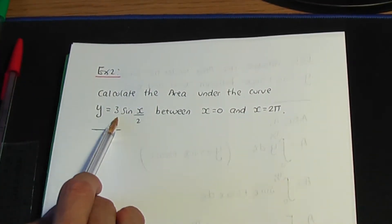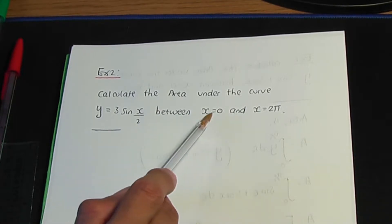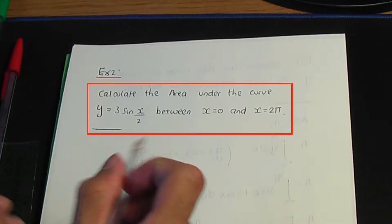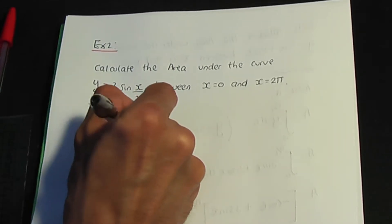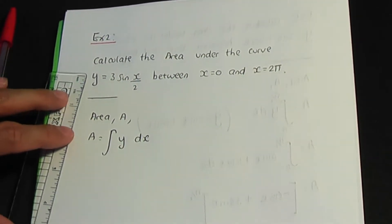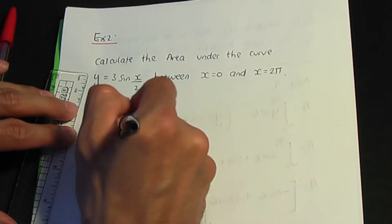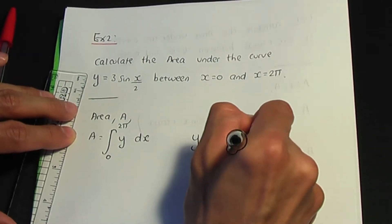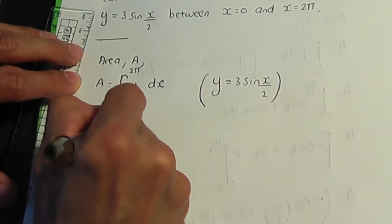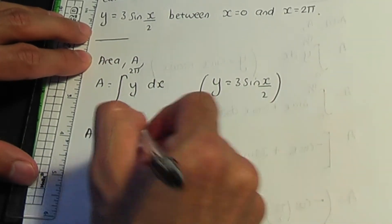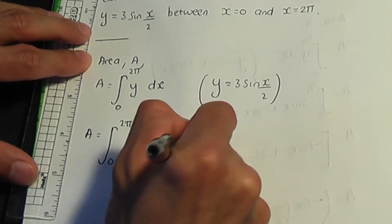Let's try another area-related problem. Calculate the area under the curve y equals 3 sine(x/2) between x equals zero and x equals two pi. To work out the area A, we use the formula: integrate y with respect to x with limits zero and two pi. Our curve equation is y equals 3 sine(x/2), so we integrate 3 sine(x/2) with respect to x between zero and two pi.